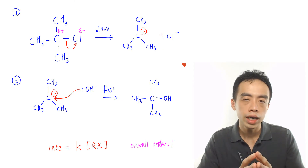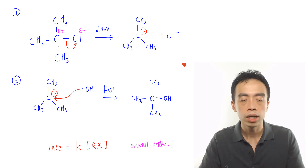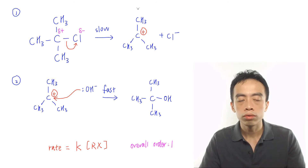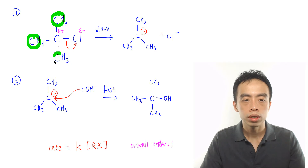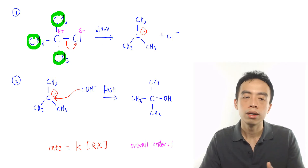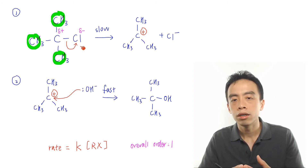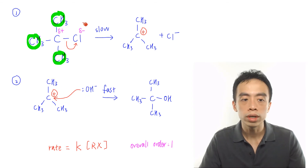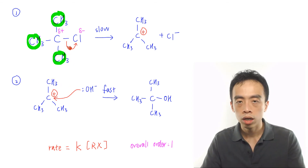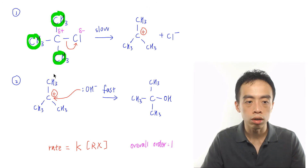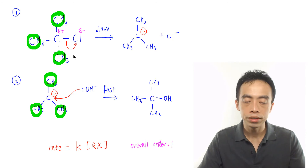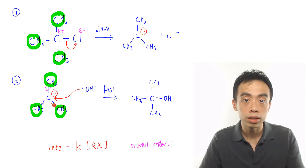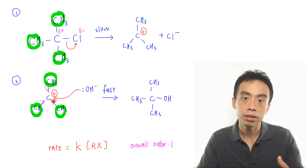Tertiary halides favor SN1 mechanism because SN1 involves formation of a carbocation C⁺. With a tertiary halide, when it forms a carbocation, that carbocation is attached to three electron-donating R groups. All these R groups push electrons toward the carbocation, making it very stable and favoring its formation. In turn, this favors the SN1 mechanism.